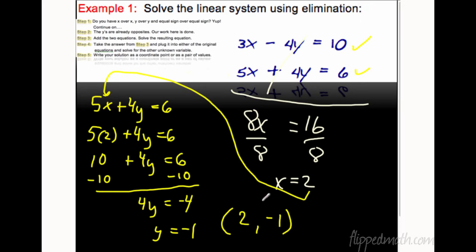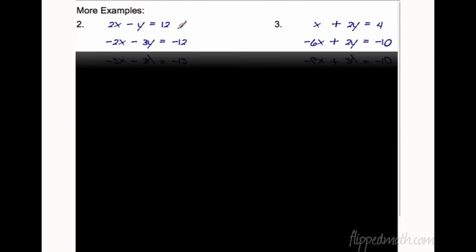If you want, you can plug these points in and check it out. Is 3 times 2 minus 4 times negative 1 equal to 10? Let's check it out. 3 times 2 is 6 minus 4 times negative 1 is negative 4. Is that equal to 10? Yes, it is. You have to check both equations. You can't just check one. So let's try this one. 5 times 2 is 10 plus 4 times negative 1 is negative 4. Is that equal to 6? Yes, it is. That's our little check. It works.